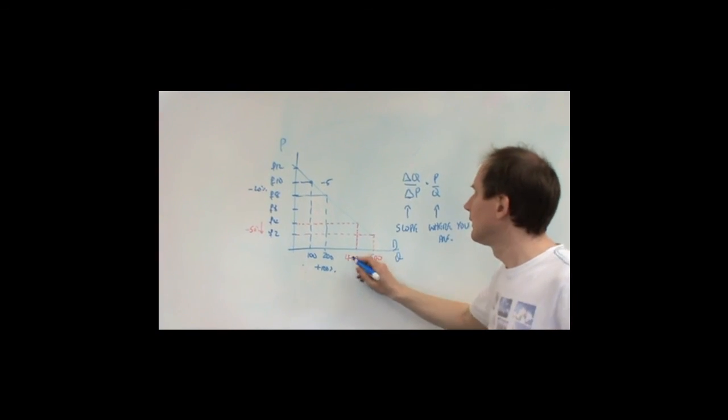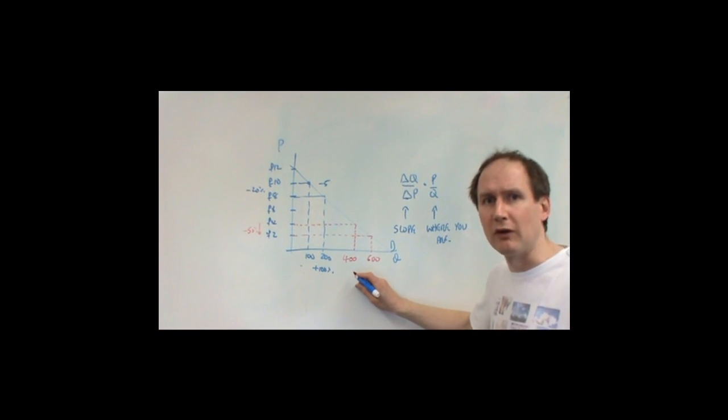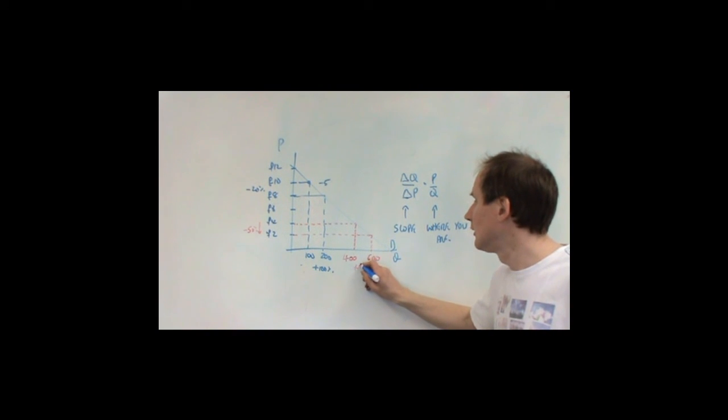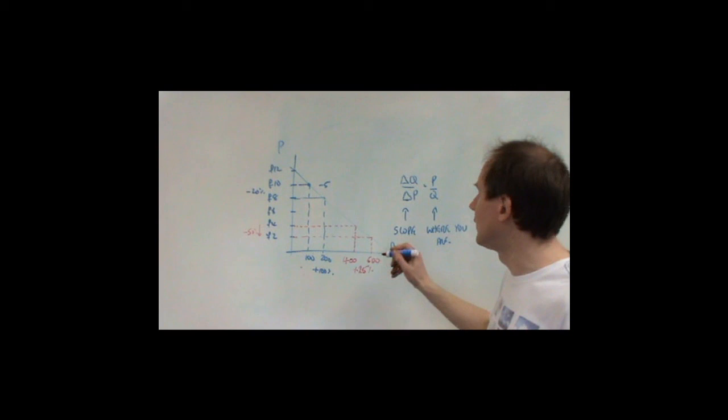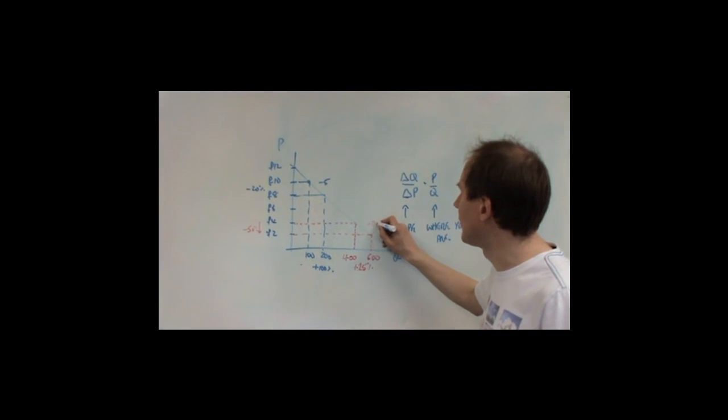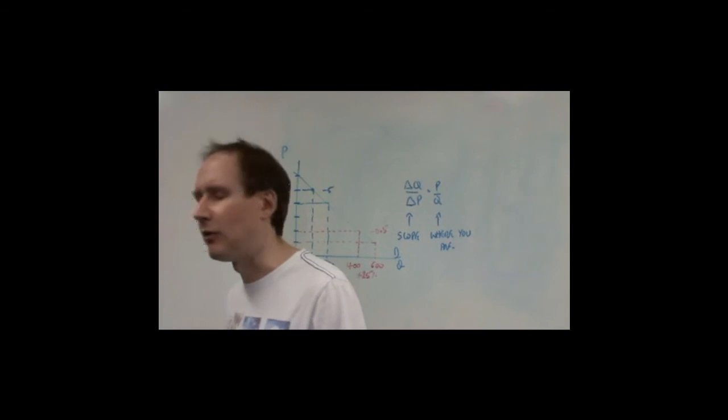But, the result is demand rises by 100 units. But, proportional to where it was, that's only a 25% increase in demand. So, down here, price elasticity of demand is only minus 0.5. Demand has become inelastic.